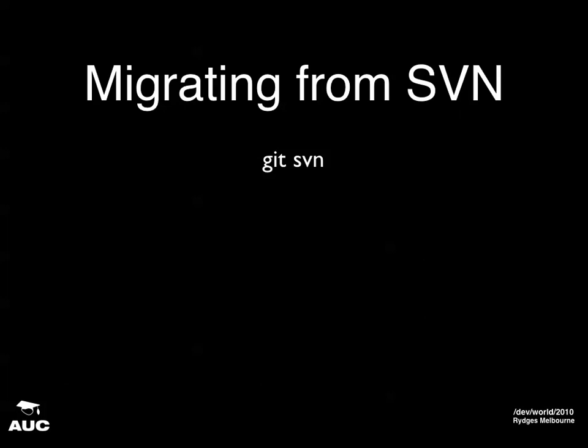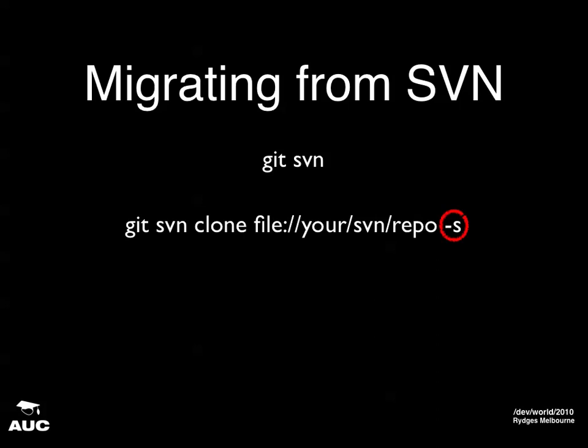If you're a Subversion user and want to migrate to Git, Git has a subcommand called 'git svn' which allows you to work with Subversion repositories. You can clone your Subversion repository into a Git repository. The '-s' flag tells Git you're using the standard Subversion convention with trunk, tags, and branches directories. If you're planning to have some people continue working with Subversion while others use Git, you really need to read the documentation on this command carefully — it's not some magical automatic thing that'll just work.